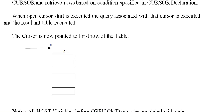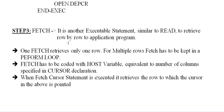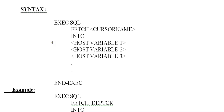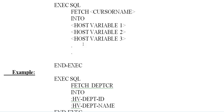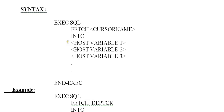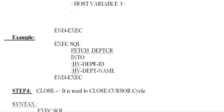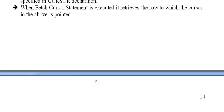Step 3 is to fetch the data from the resultant table. It is another executable statement, similar to a READ, to retrieve row by row into the application program. FETCH retrieves only one row at a time. In order to retrieve multiple records, you need to keep it in a PERFORM loop. FETCH has to be coded with host variables equivalent to the number of columns specified in the Cursor declaration. When the FETCH CURSOR statement is executed, it retrieves the row to which the cursor is currently pointed. The syntax is: EXEC SQL FETCH cursor-name INTO host-variables END-EXEC. For example: EXEC SQL FETCH cursor INTO Department-ID and Department-Name END-EXEC.